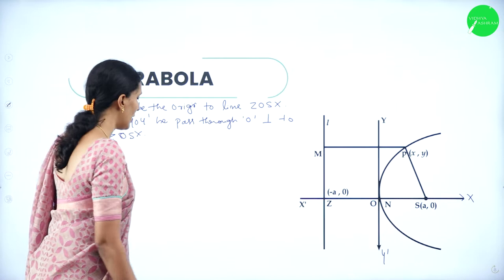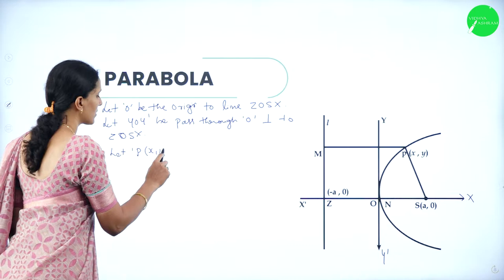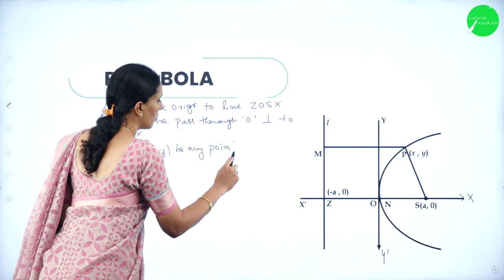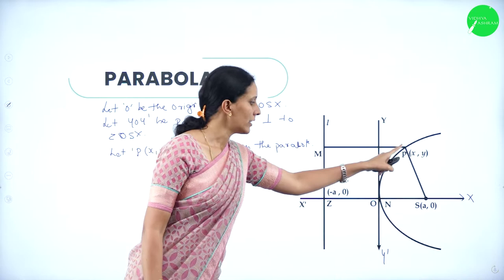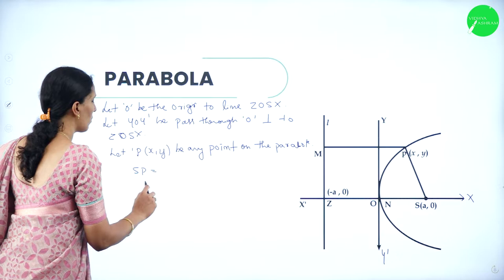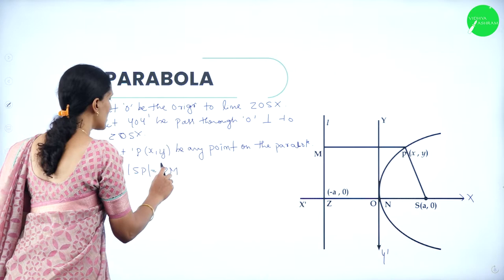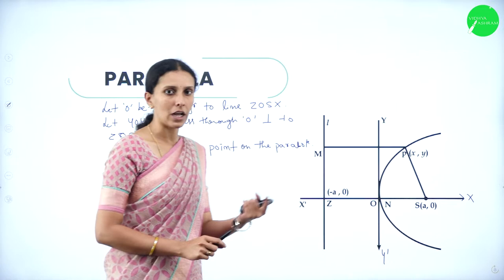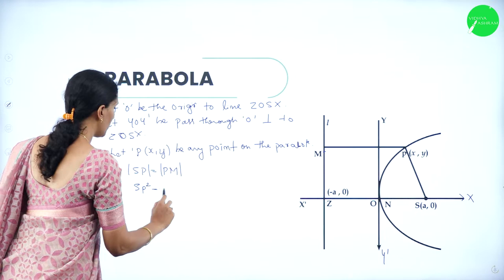By the definition of a parabola, the distance from P to the focus and the distance from P to the directrix must be equal. So SP = PM in modulus. Therefore SP² = PM². Drawing a perpendicular from P to the directrix, PM = ZN, so SP² = ZN².